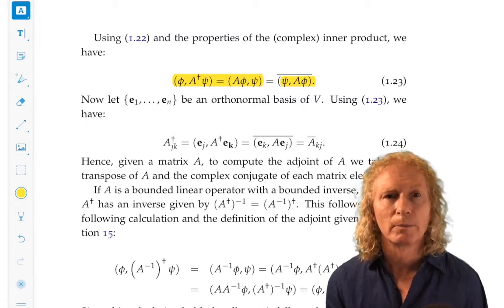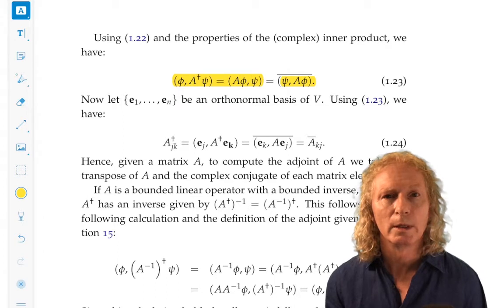Now, with that relationship, let's consider an orthonormal basis, E1 through En, on our vector space. So, it's going to be finite dimensional in this case, for this argument.